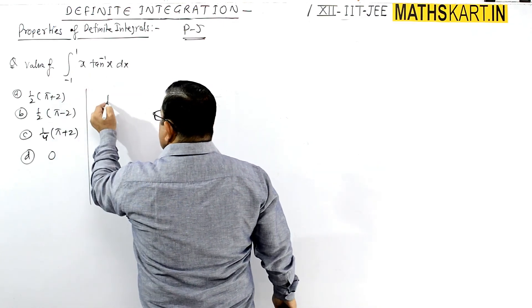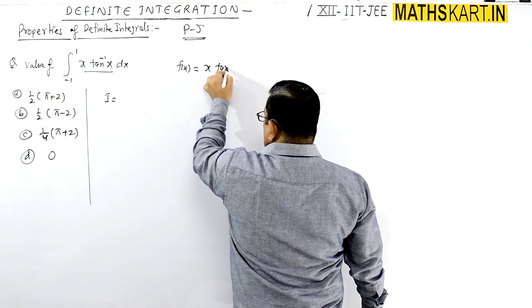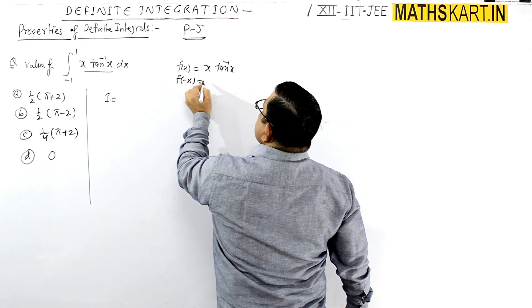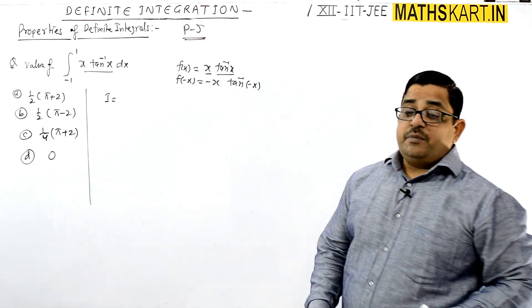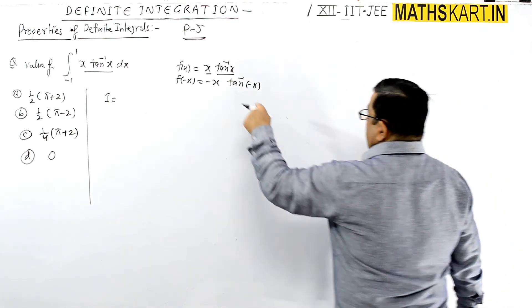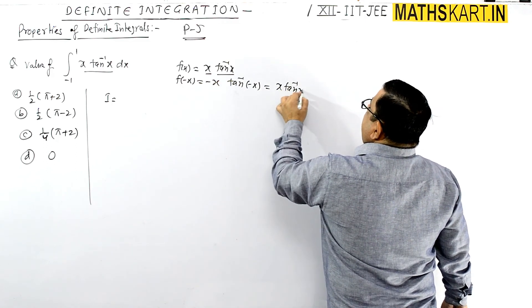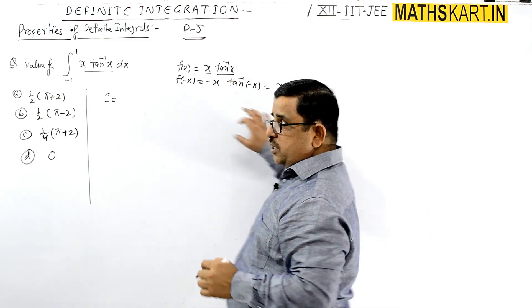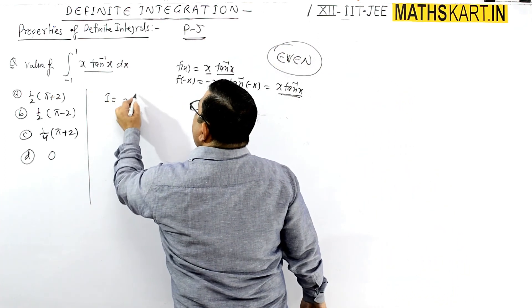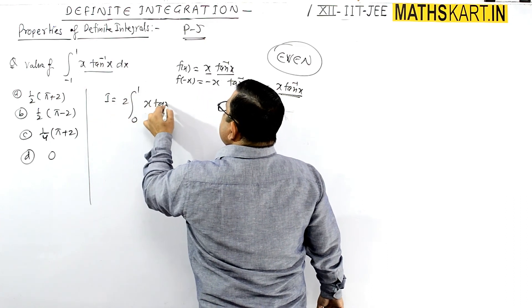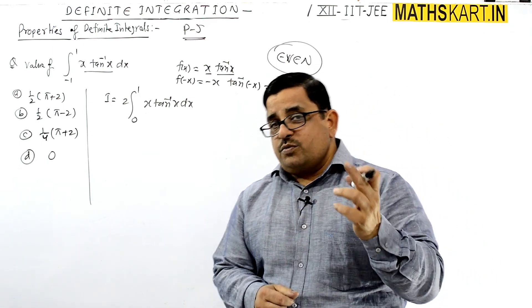Check if the function is even or odd. For f(x) = x tan inverse x, we get f(-x) = -x tan inverse(-x). Since tan inverse(-x) = -tan inverse(x), we get f(-x) = -x(-tan inverse x) = x tan inverse x. So it is an even function. When you've checked that it's even, its value doubles to two times 0 to 1 of x tan inverse x dx.